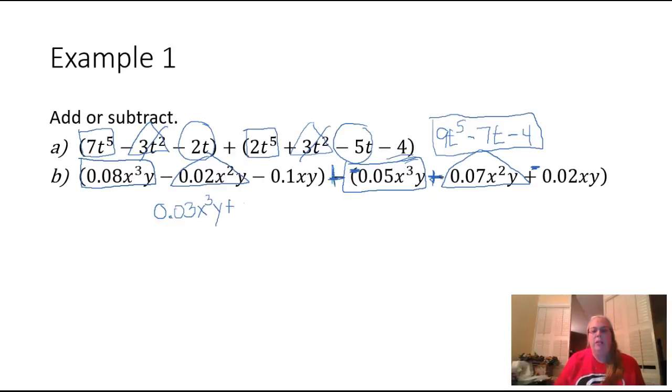Well, that's going to give me a positive 0.05. And then the variables will be x squared and y. They won't change.